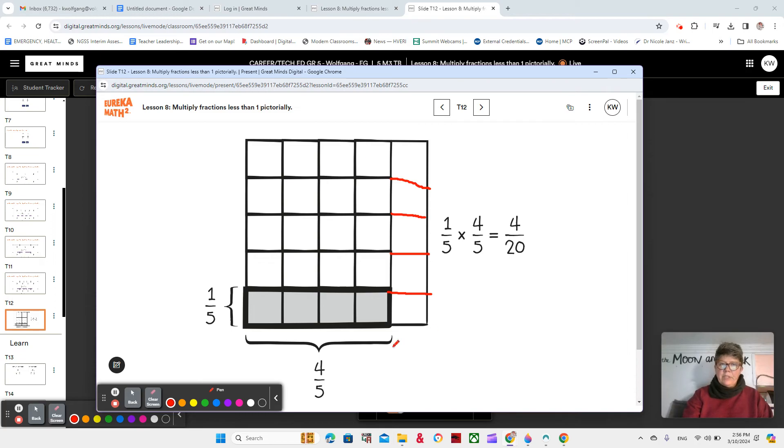So now if we partition it, we actually see that there's 25. So 1/5th times 4/5ths is actually 4/25ths because 5 times 5 is 25. And you can see now that there's 25 sections.